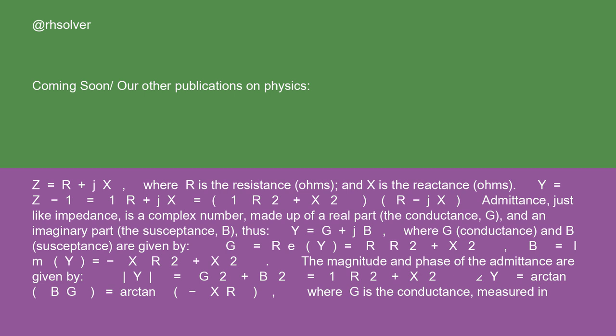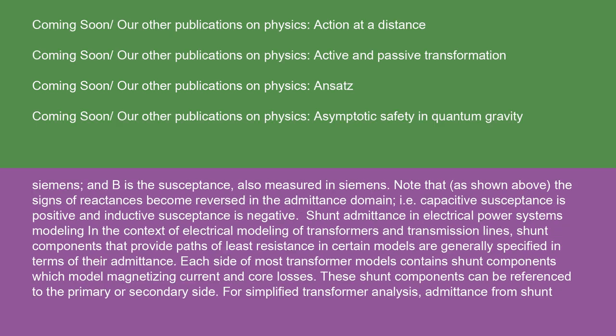Where G is the conductance, measured in Siemens, and B is the susceptance, also measured in Siemens. Note that, as shown above, the signs of reactances become reversed in the admittance domain, i.e., capacitive susceptance is positive and inductive susceptance is negative.